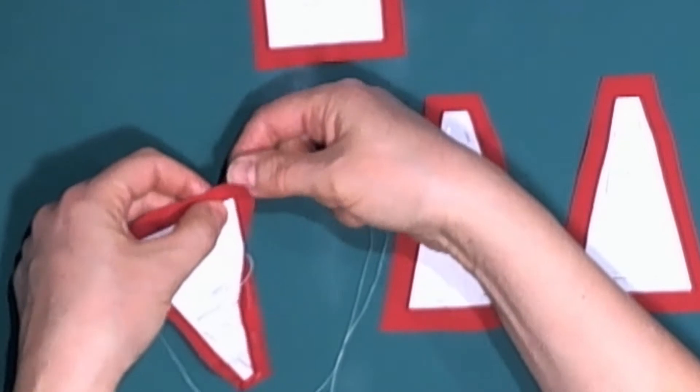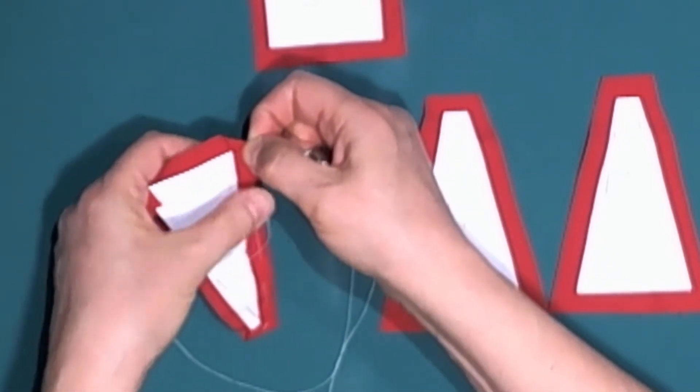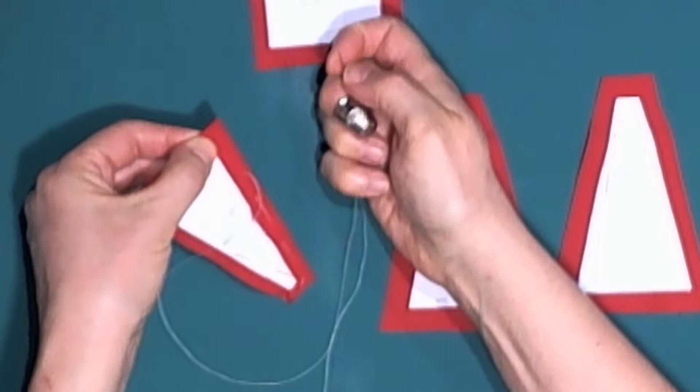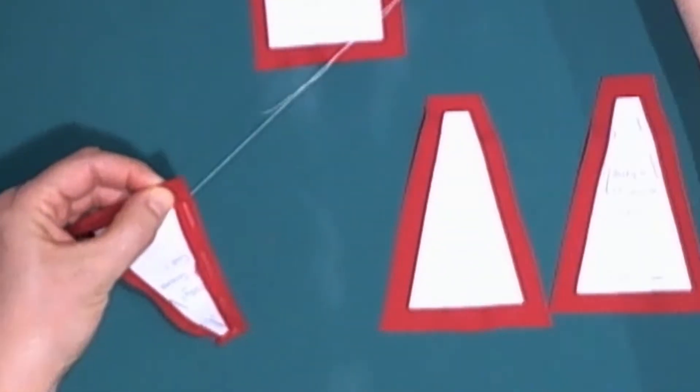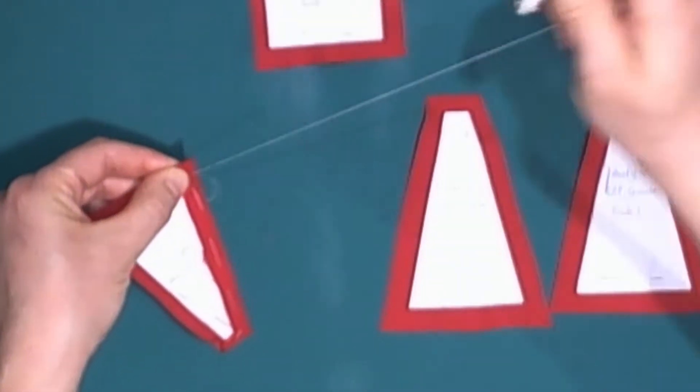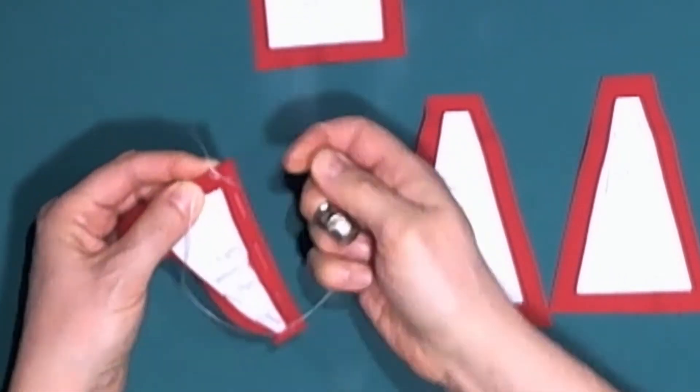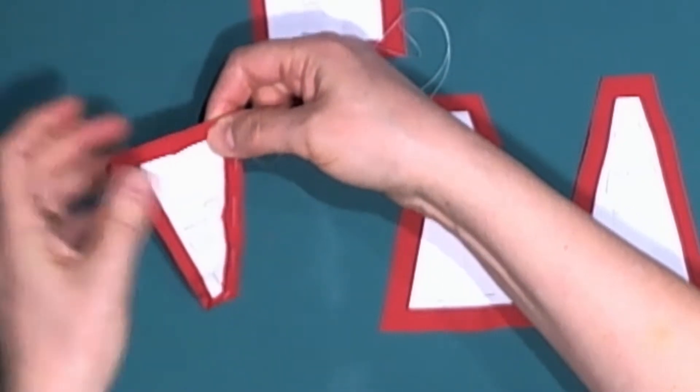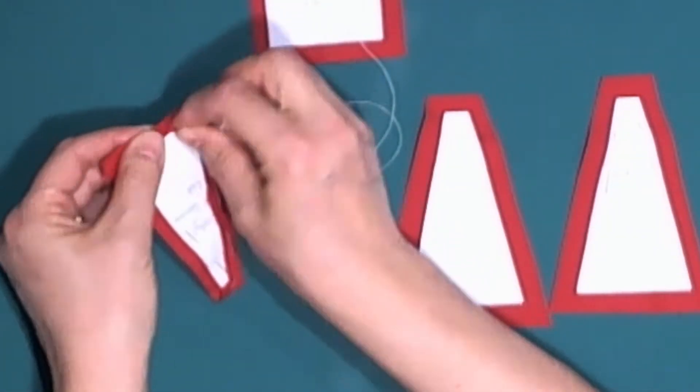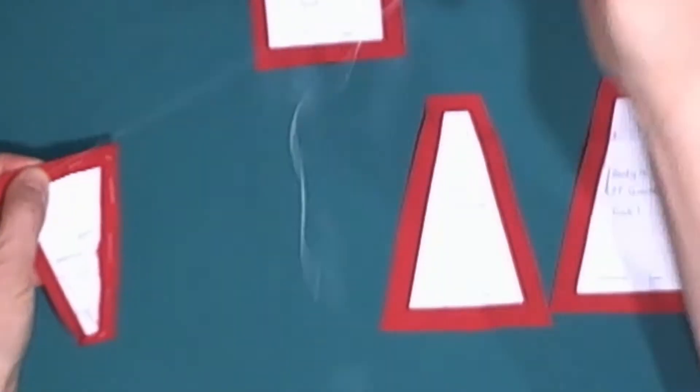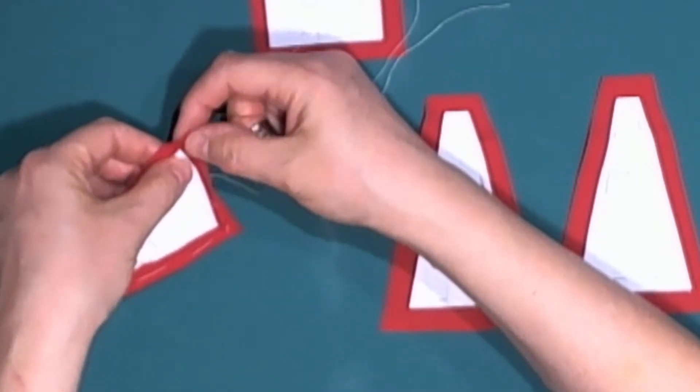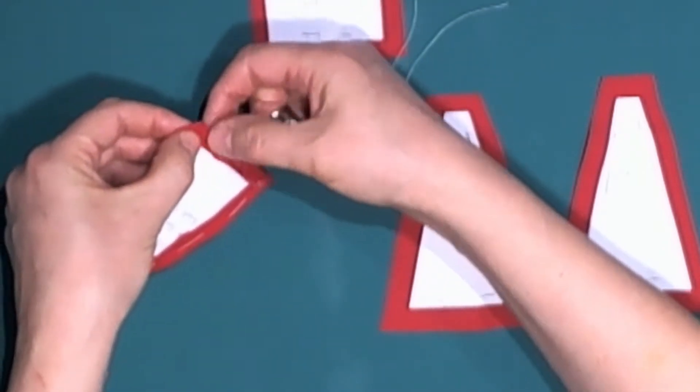Then fold the fabric in the corner over the corner point of the card template. Hold this down, and then fold the side and base edges over to make a neat miter. Tack these in place. Repeat at the next corner point. Then work your way up the other side to the top.